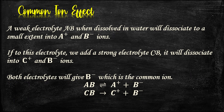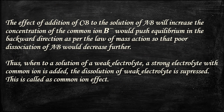Common Ion Effect: A weak electrolyte AB, when dissolved in water, will dissociate to a small extent into A⁺ and B⁻ ions. If we add a strong electrolyte CB to this solution, it will dissociate into C⁺ and B⁻ ions. Both electrolytes give B⁻ as the common ion. The addition of CB increases the concentration of the common ion B⁻, which pushes the equilibrium in the backward direction per the law of mass action, causing dissociation of AB to decrease further. Thus, when a strong electrolyte with a common ion is added to a solution of a weak electrolyte, the dissociation of the weak electrolyte is suppressed. This is called the common ion effect.